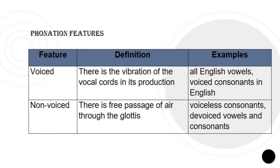Phonation features. We have voiced and non-voiced. For voiced, there is a vibration of the vocal cords in its production, and examples are all English vowels and voiced consonants in English. Non-voiced: there is a free passage of air through the glottis, and examples are voiceless consonants, de-voiced vowels, and consonants. Remember that distinctive features are phonological features, so such de-voiced consonants and vowels can occur due to environmental conditioning.